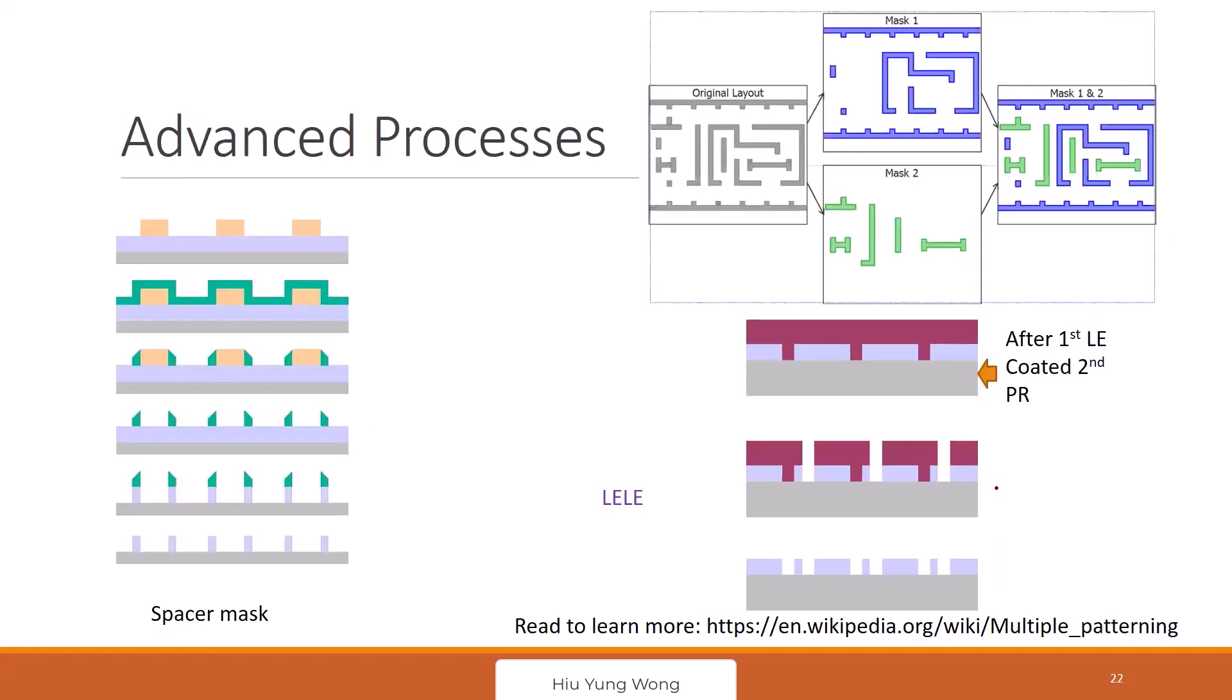Now, so we are done with the process flow, but I still want to introduce two more things to you. One is how do you pattern a very small pattern, a very small feature?